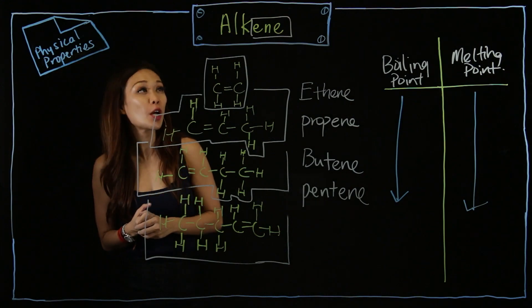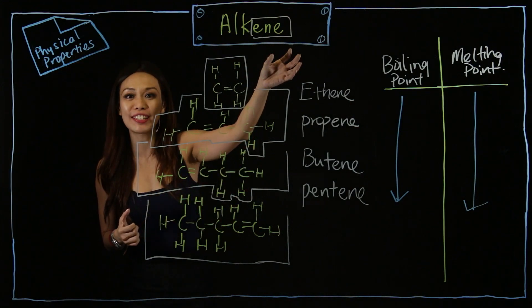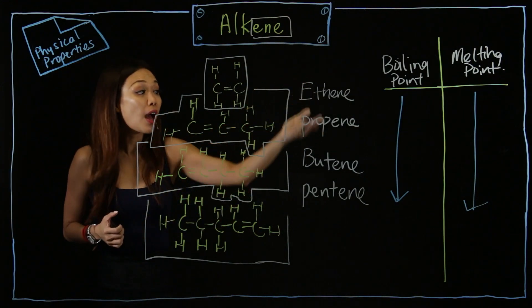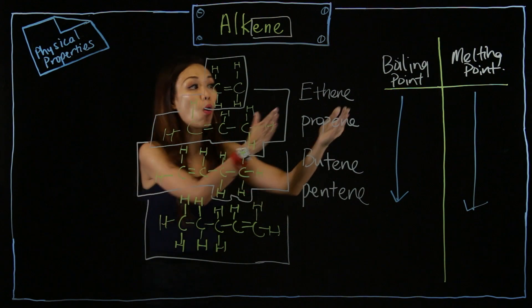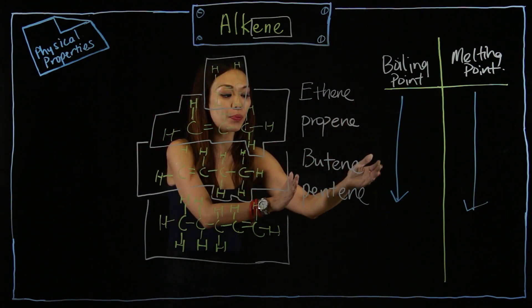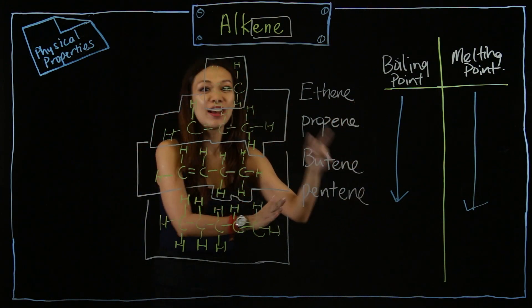Now, we're going to go through the physical property of alkene. As you can see here, I have written down all the family: ethine, propine, butine, pentine.